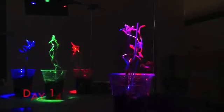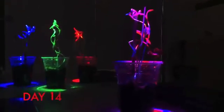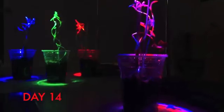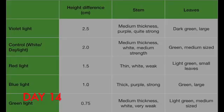By day 14, we recorded our measurements and what we observed. Our results were: for violet light, the height difference after one week was 2.5 cm. For our control, white light, the height difference was 2 cm. For red, 1.5 cm. For blue, 1 cm. For green, 0.75 cm.